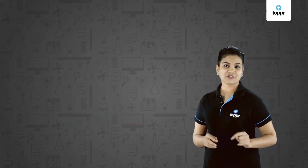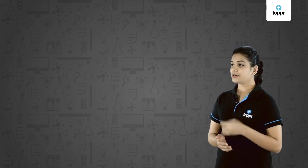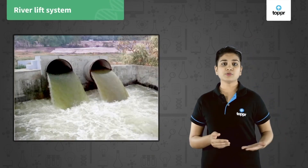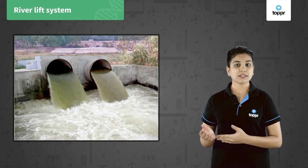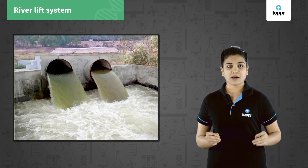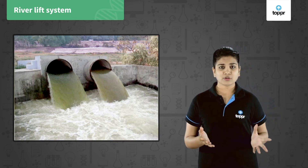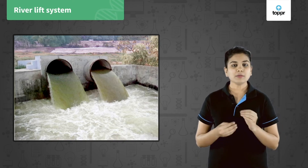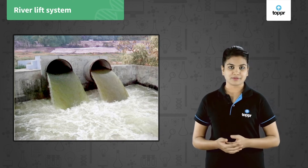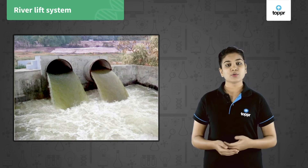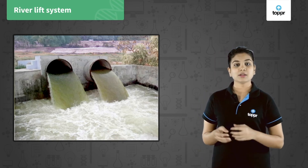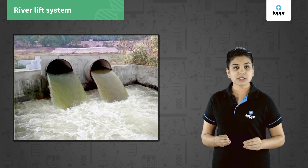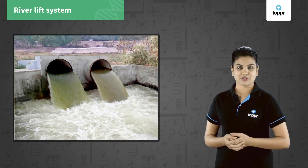The third type of irrigation system is the river lift system. It is used in areas where the flow of the canal is irregular or inadequate due to improper supply of water. In such a system, water is drawn directly from the rivers for supplementing irrigation.